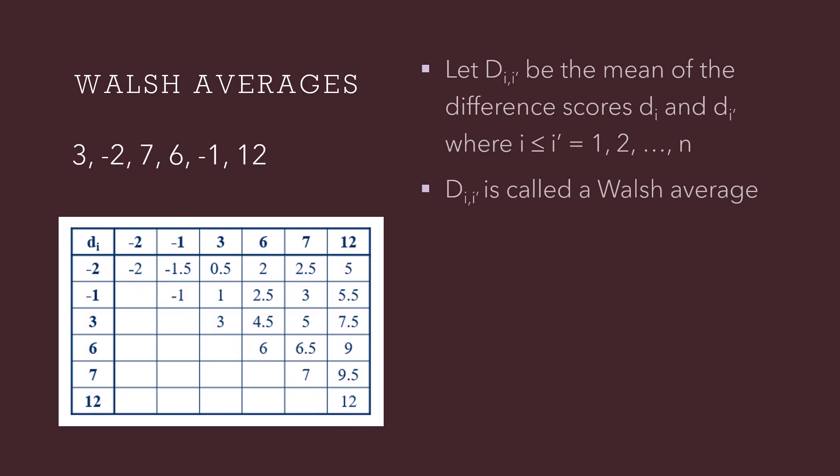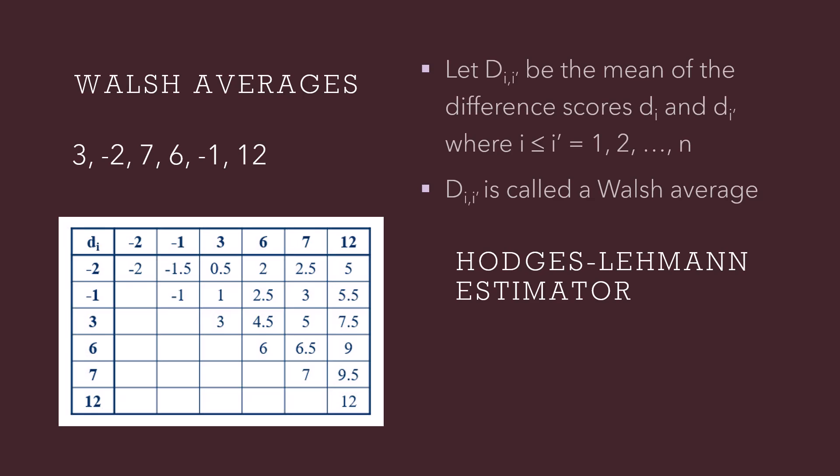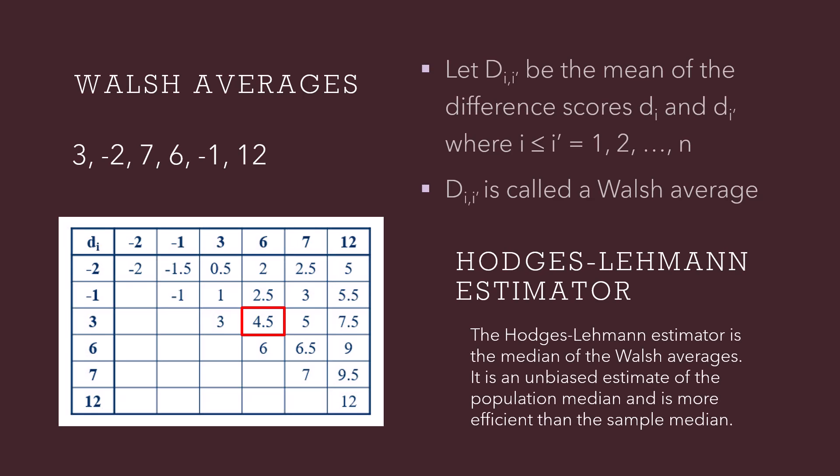Capital D is called a Walsh average, so here we have a collection of Walsh averages. I am now prepared to introduce a very important estimator: the Hodges-Lehmann estimator, which is the median of the Walsh averages. It is an unbiased estimate of the population median, meaning that if we took many, many random samples and calculated the Hodges-Lehmann estimator for each, the average of those estimators would equal the population median. It is also a more efficient estimator than the sample median, so while using the sample median is valid, the Hodges-Lehmann estimator is actually a better estimate.